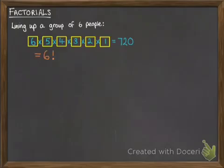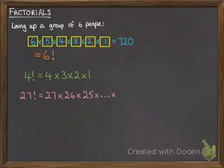Now, this particular way of doing this, six times five times four times three times two, we summarise that with this six exclamation mark, and how we read that is six factorial. And it means that you take that number and you multiply it by every whole number below it. So four factorial would be four times three times two times one. 27 factorial would be 27 times 26 times 25 times so on and so on, all the way down to one.